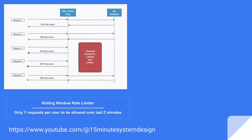Let's talk about the system we are going to design. We are going to design a rolling window-based rate limiter, where only Y number of requests per user can be allowed over the last Z minutes. For example, a user X sends request 1 to an API endpoint. The rate limiter will check whether this request has passed the limit or not. If the request has breached the limit, the rate limiter will block the request and send back a 429 HTTP status. If not, the rate limiter will keep passing all requests to the API endpoint until the limit is breached, and the API endpoint will keep sending 200 HTTP status code in response to the user directly.